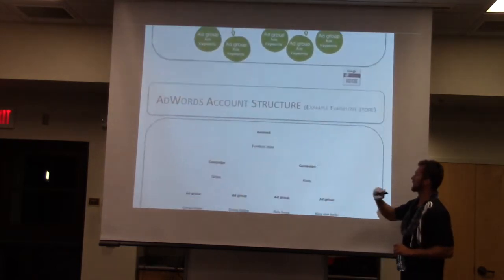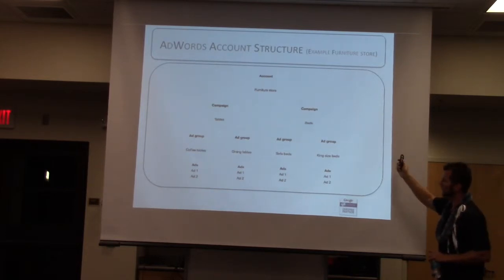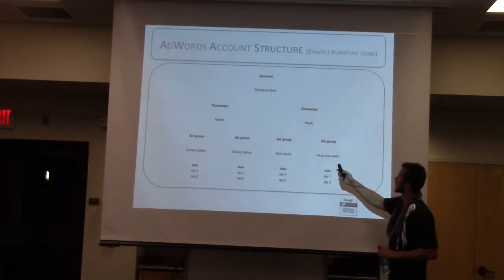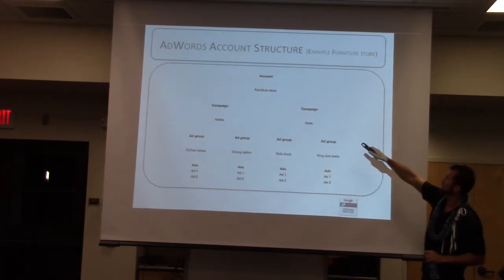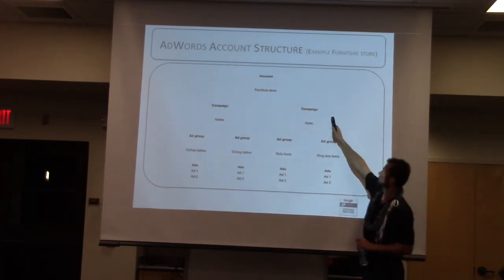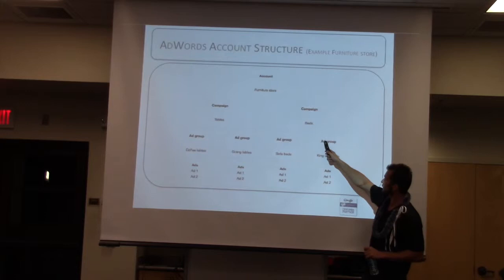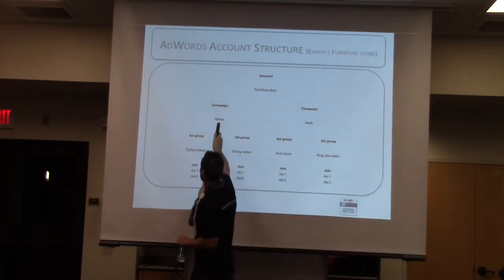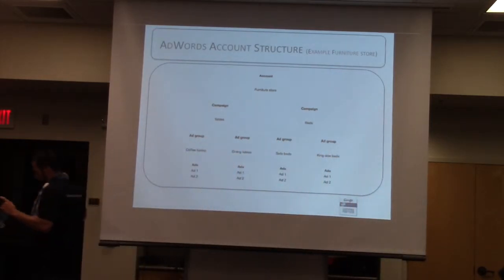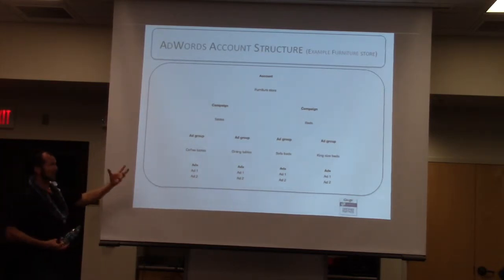I have an example here. For example, this is a furniture store — how could that look? You have that account, you have a furniture store, you have campaigns, or you have more than one campaign. This says ads, this says tables. So you have, for example, different products as campaigns.